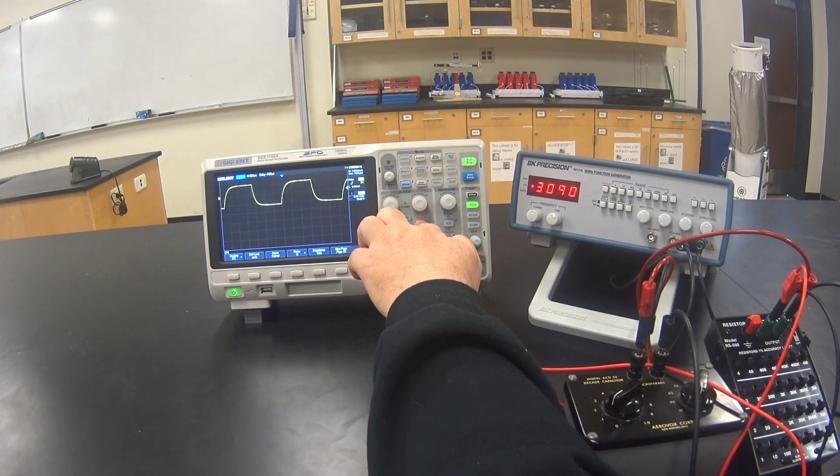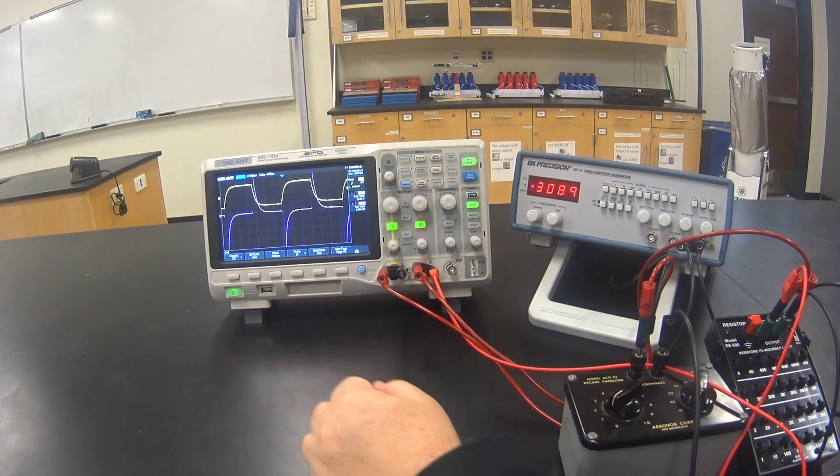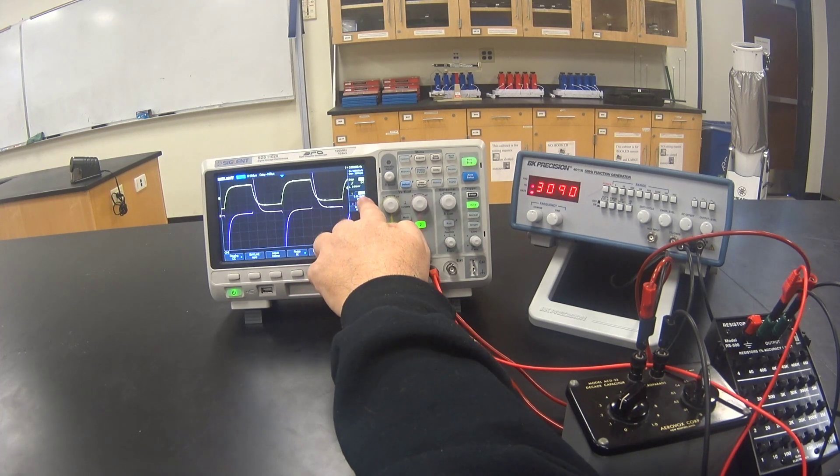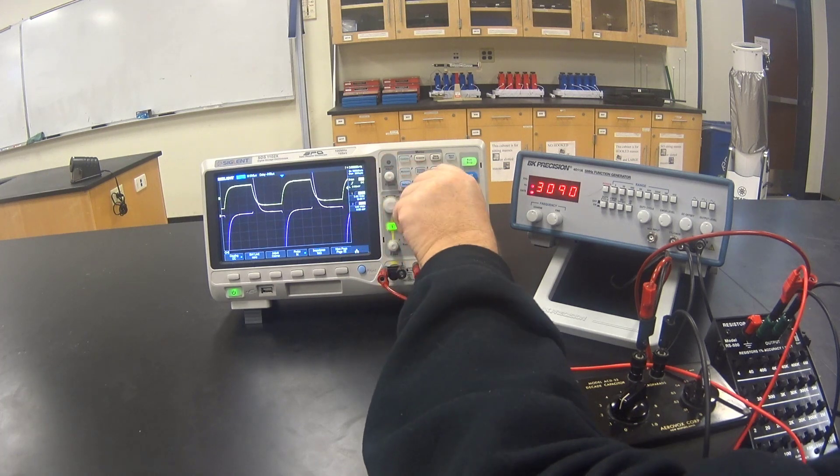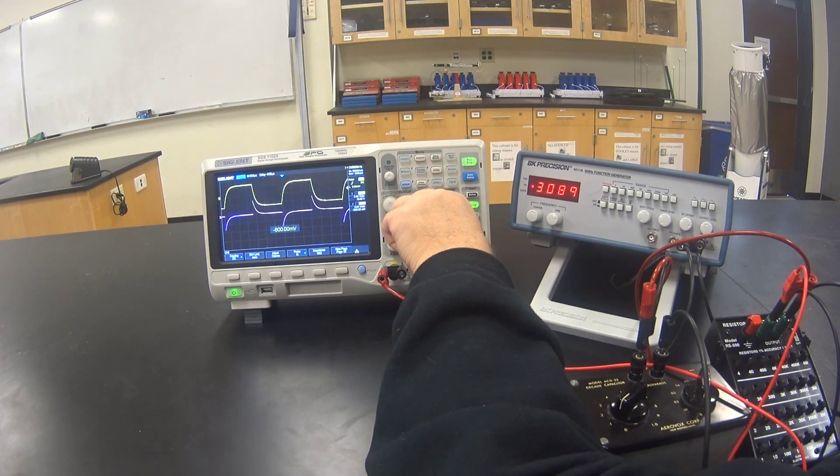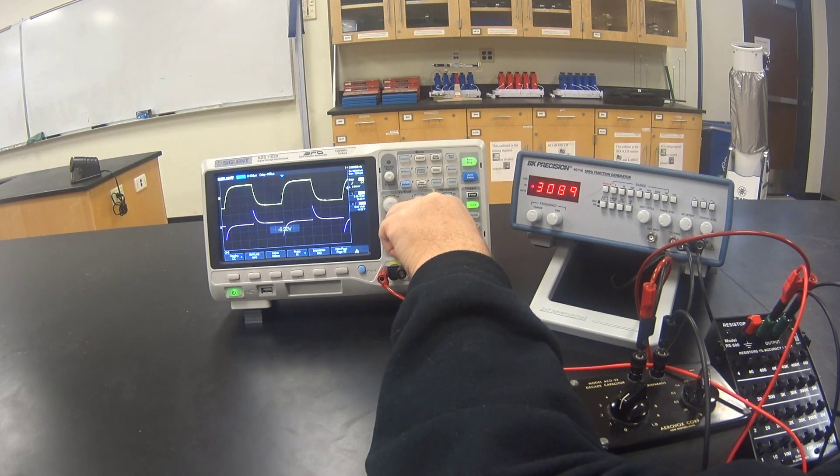Push the number two button to turn on channel two. You can read the volts per division here. Adjust the voltage on channel two to match the volts per division on channel one. And adjust the positioning knob to move channel two into the lower half of the oscilloscope screen.